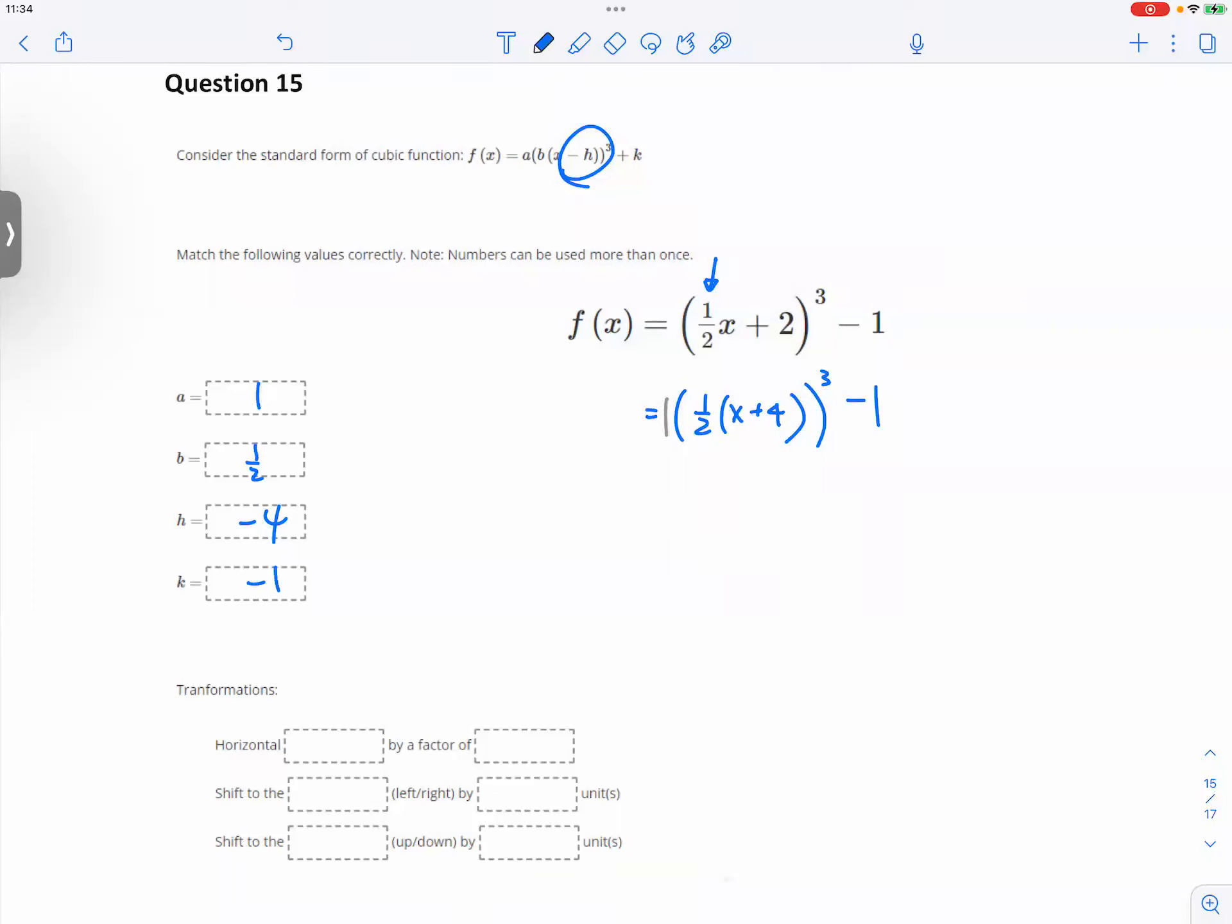It's a horizontal. It's going to be 1 over b, so it's 2. 1 over one-half is 2. So that means it's a horizontal stretch by 2.